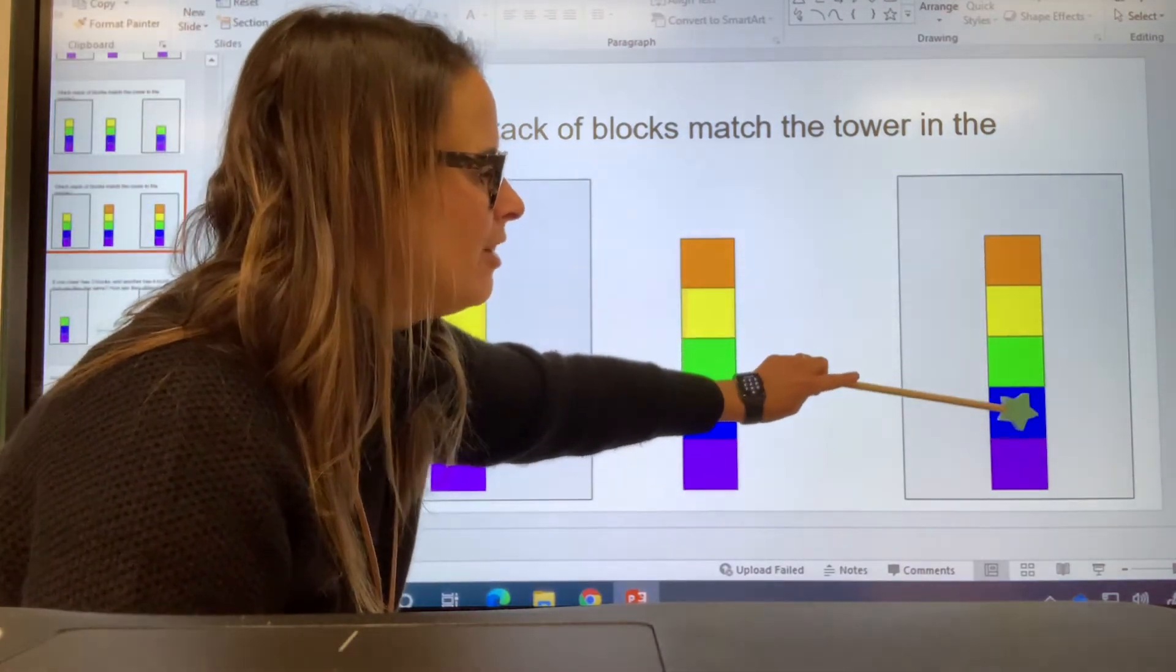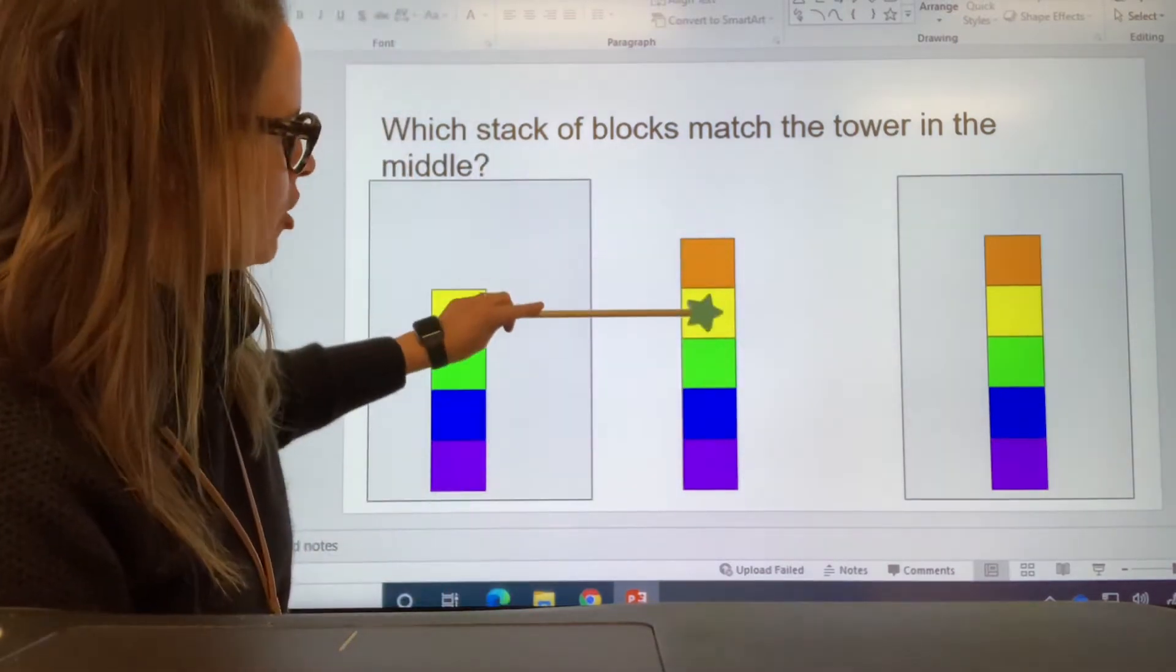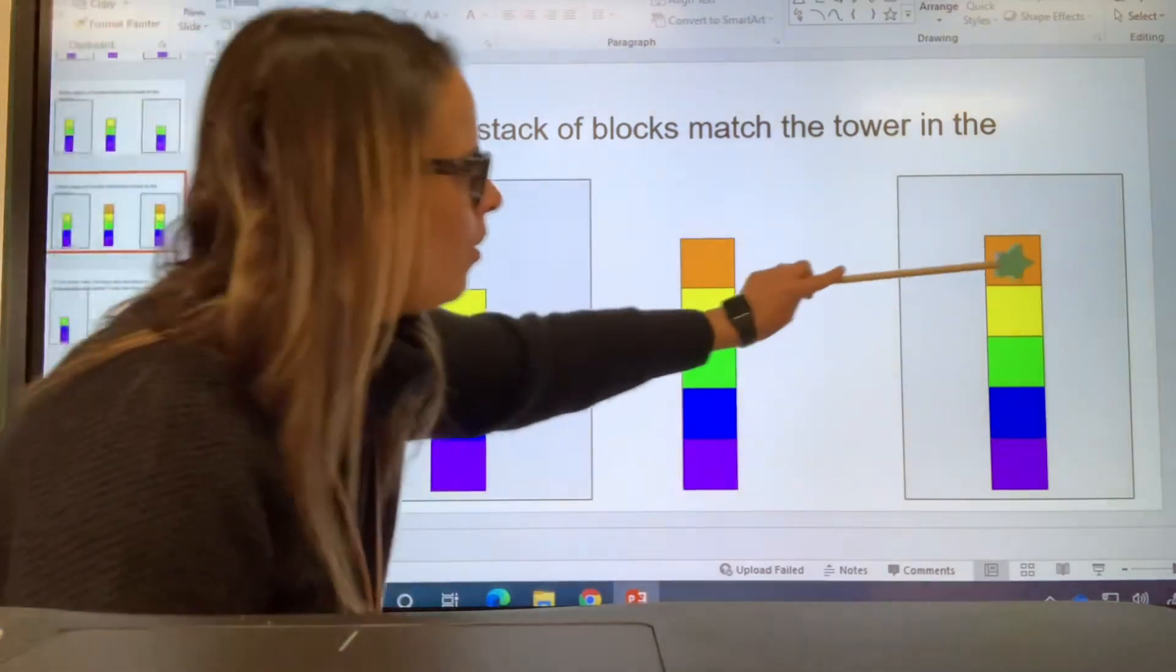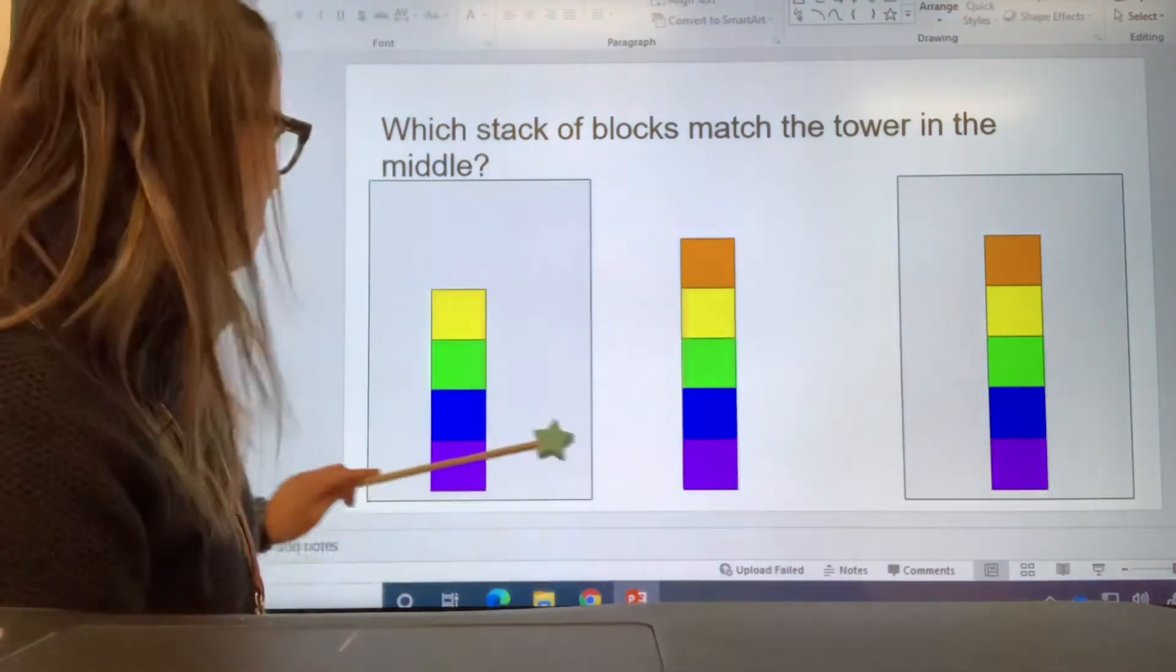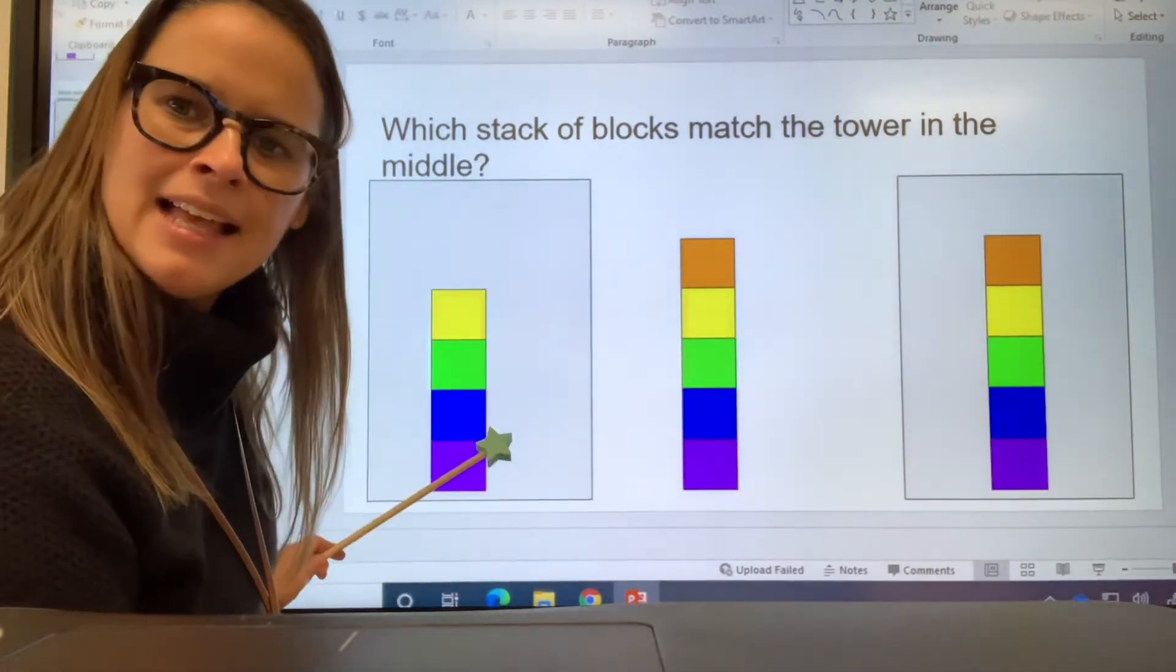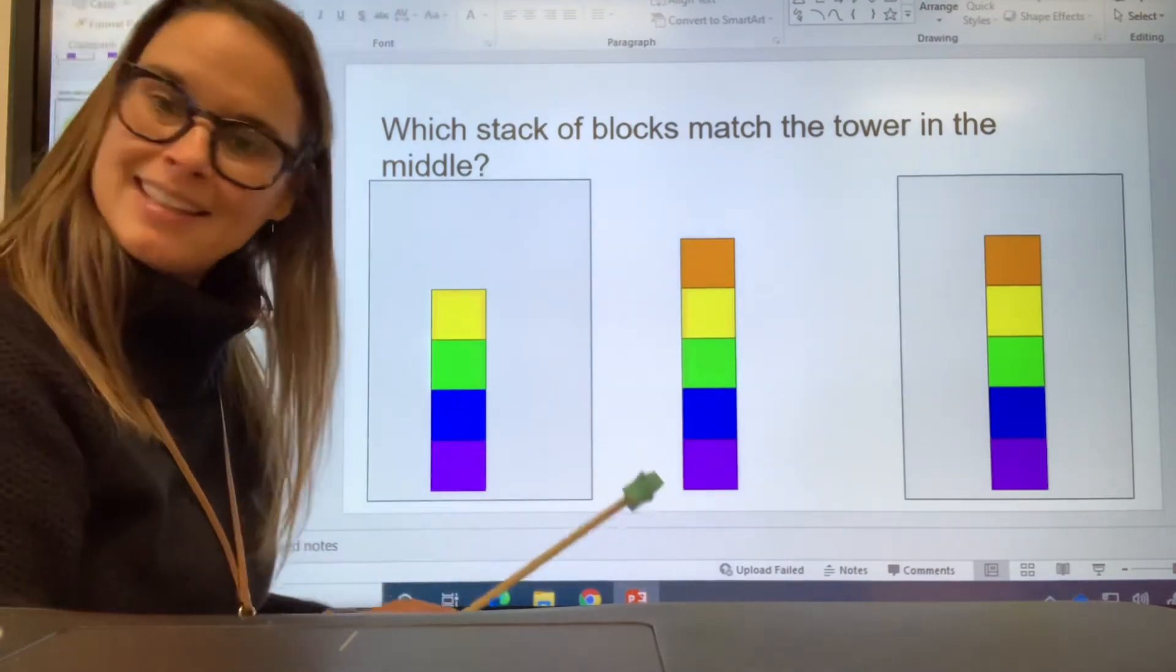One, two, three, four, five. Orange, yellow, green, blue, purple. Orange, yellow, green, blue, purple. They match. They're the same. What do we say about this one? This one has less. Right. This one has less.